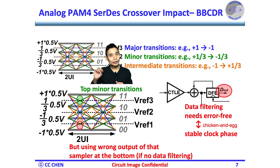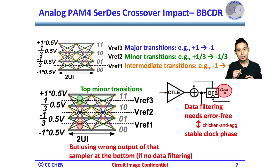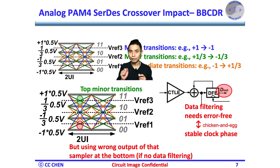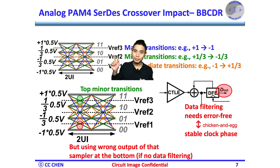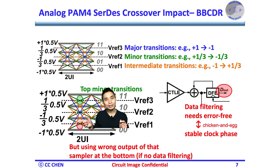PAM4's signal has four levels, so you can go to any of the four voltage levels in the next data symbol from the current level. We need two different transitions: a major transition from plus one to minus one, minor transitions, and intermediate transitions. For the elegant approach in PAM4 SerDes, we must have the threshold at the midpoint between those levels so we could have a transition sampler at the midpoint levels. But we must only use the right output of the sampler that corresponds to the right transition — if we use the wrong output while a different transition happens, the wrong transition sample output would push the CDR away from the ideal lock phase.